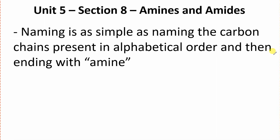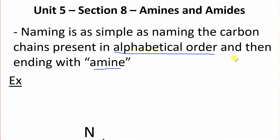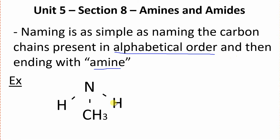And when it comes to naming these, they're actually pretty simple. All we need to do is identify our carbon chains and put them in alphabetical order, and then add the word amine. That is it. So, if we're looking at an example here, we've got a methyl group — there's just one group. So, we're going to call this one methyl, and then add the word amine: methylamine.